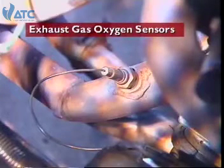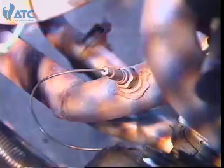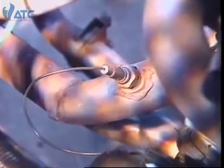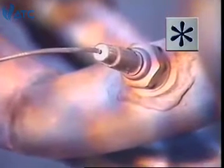This section examines the exhaust gas oxygen sensor. The oxygen sensor, also called a lambda sensor, is mounted in the exhaust manifold or the engine pipe.